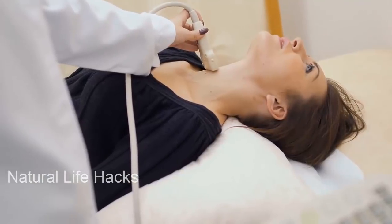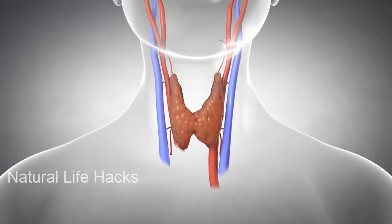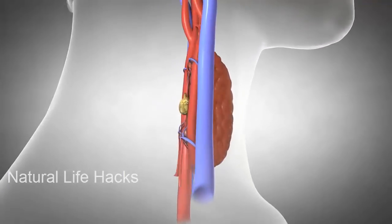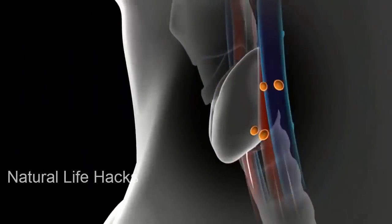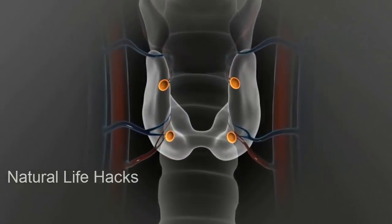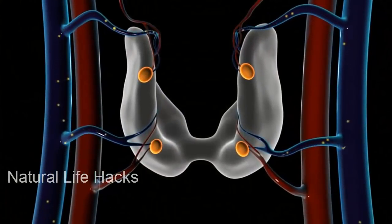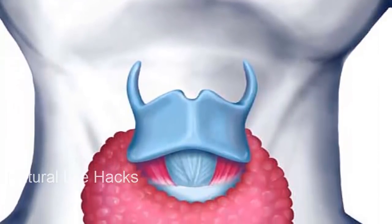The thyroid gland produces and releases these hormones into the bloodstream. The T4 and T3 hormones control our body's metabolism, and calcitonin controls the blood calcium levels. The thyroid gland is very important because without the T4 and T3 hormones, our bodies wouldn't be able to efficiently convert food into energy.